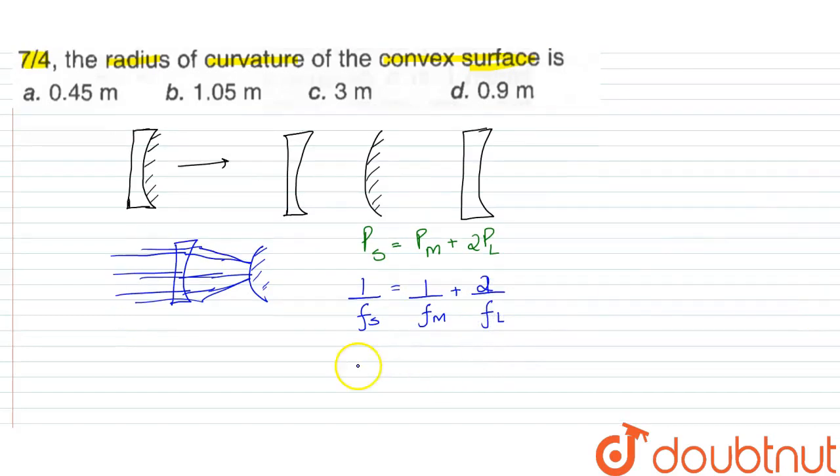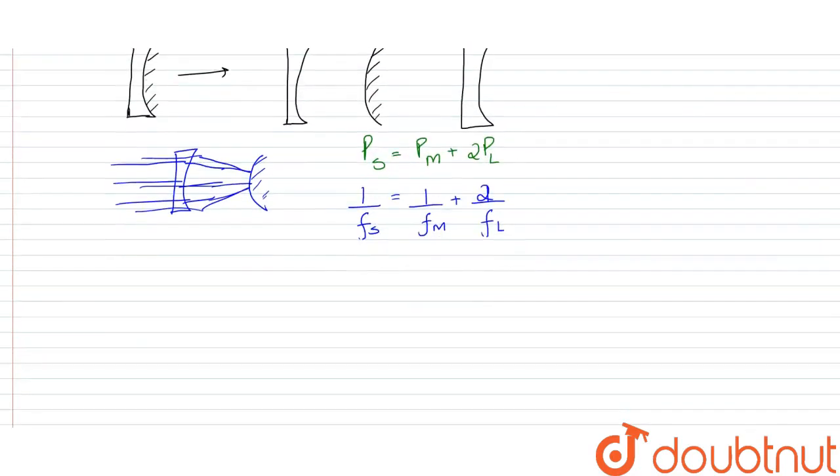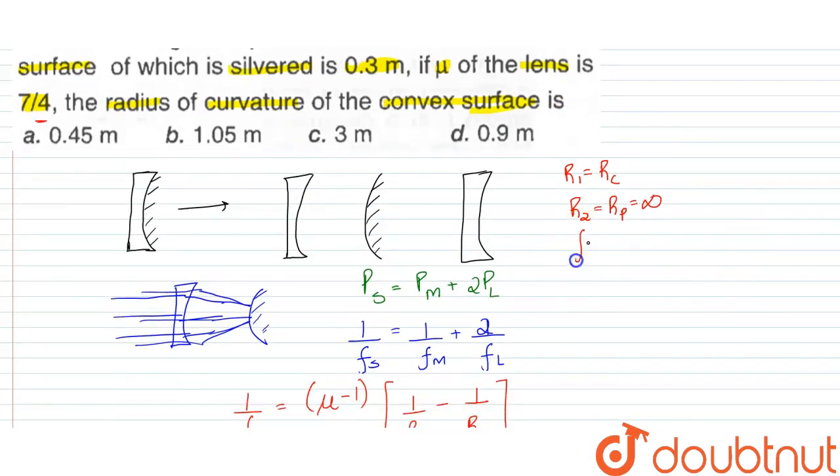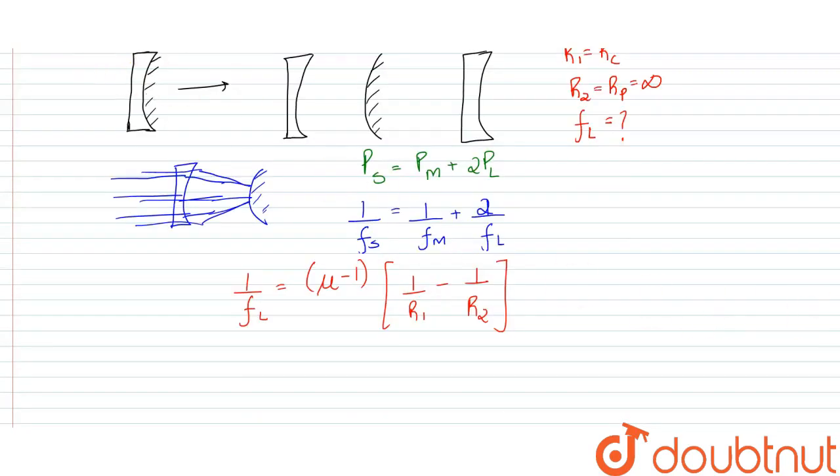For the lens, the formula for focal length is: 1/f_L = (μ-1)(1/R1 - 1/R2), where R1 and R2 are the radii of curvature. We know μ = 7/4. R1 is the radius of curvature for the convex surface, and R2 is for the plane surface, which is infinity because it has no curve.